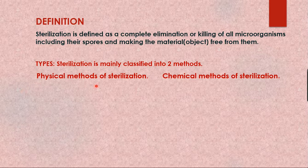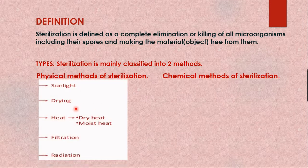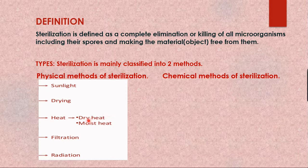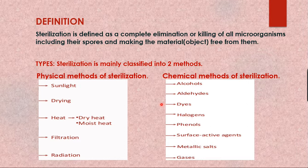The two types are physical methods of sterilization and chemical methods of sterilization. Physical methods are further divided into four types: sunlight, drying, heat, and within heat we have dry heat and moist heat. Sunlight, drying, and dry heat were covered in Part 1. In this part we learn about moist heat sterilization, and in coming parts we'll cover filtration, radiation, and chemical methods.